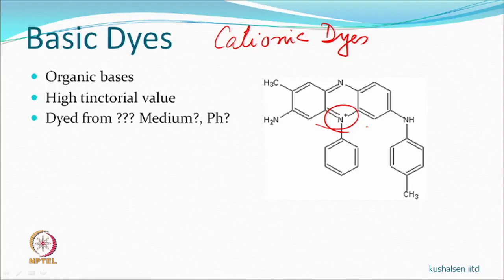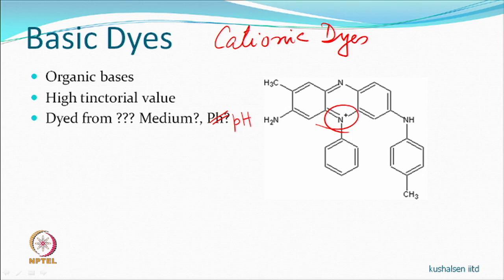A similar-looking acid dye structure, after modification to become a base, becomes a basic dye with noticeably brighter appearance — the acid dye counterpart looks duller by comparison. These dyes are applied from aqueous medium at acidic pH; only at acidic pH is the cationic group generated, enabling dyeing.